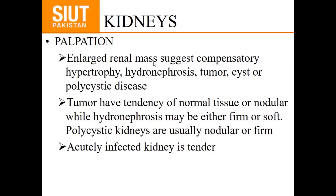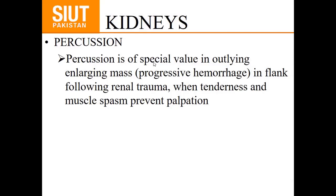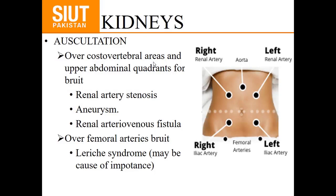Percussion: renal pain is diffusely felt in the back, but tenderness will be well localized lateral to the sacrospinalis muscles just below the twelfth rib. Percussion is of special value in outlining an enlarging mass — such as in progressive hemorrhage in the flank following renal trauma — when tenderness and muscle spasm prevent palpation. Auscultation is done in the costovertebral area and upper abdominal quadrant for renal bruit, present in renal artery stenosis, aneurysm, or renal arteriovenous fistula.